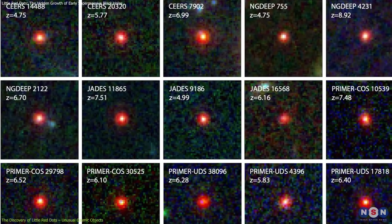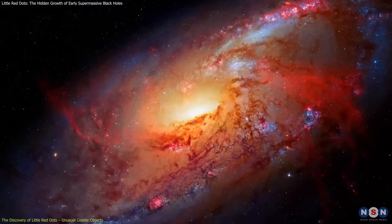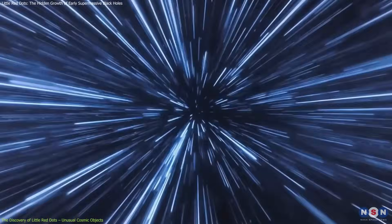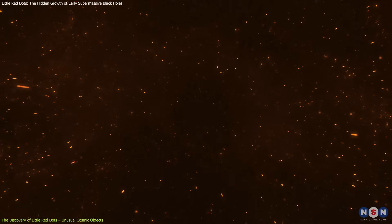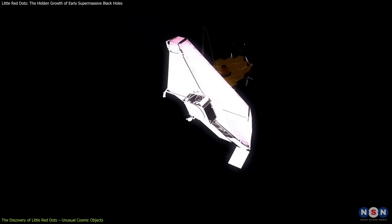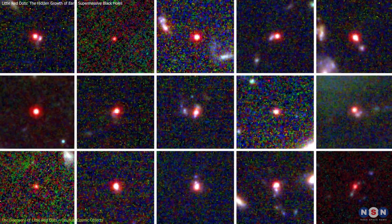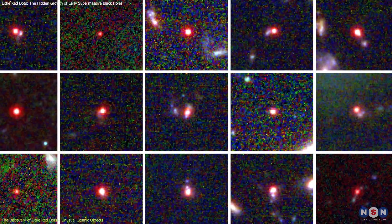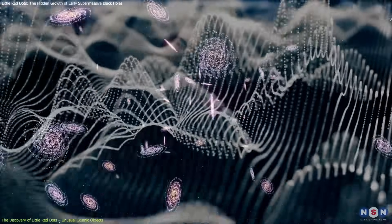But why are they red? The answer lies in their distance and composition. As light travels from these distant galaxies, cosmic expansion stretches it into the infrared range, making Webb the perfect tool for detecting them. What makes these LRDs so unusual is their compact size and infrared brightness, while emitting very little in X-rays and radio waves.